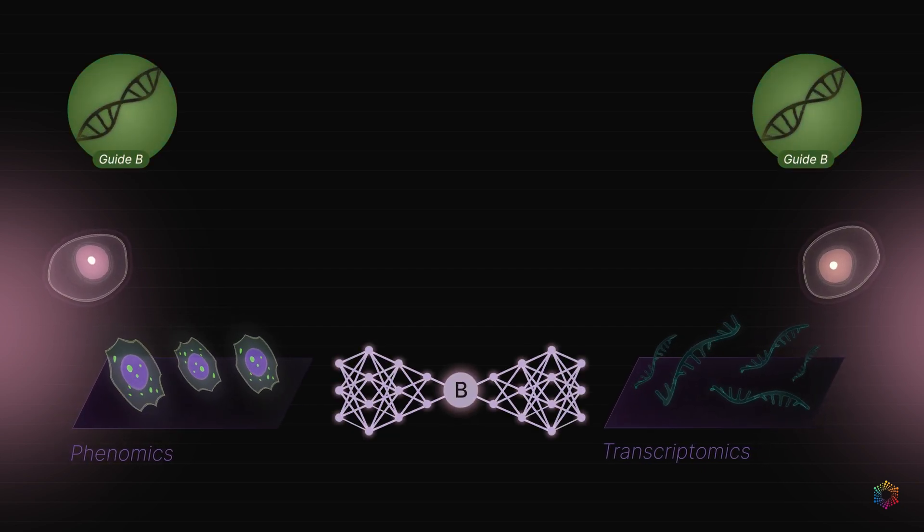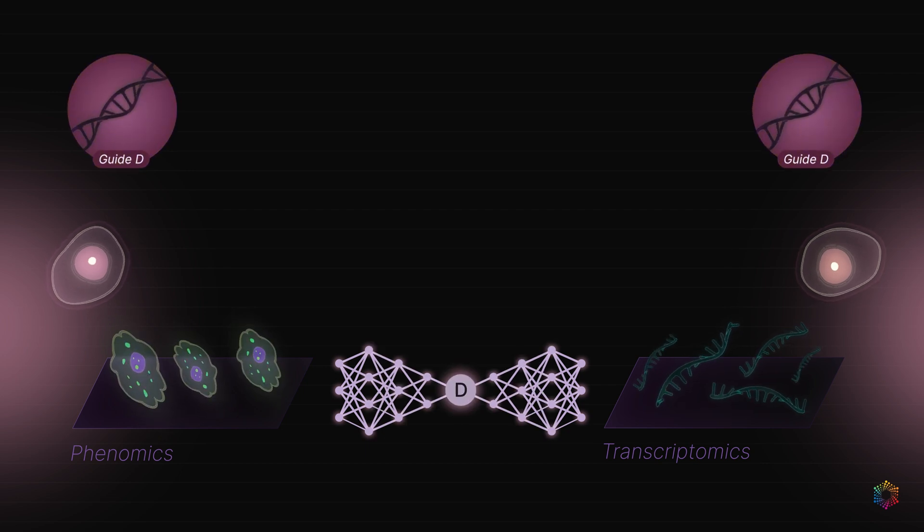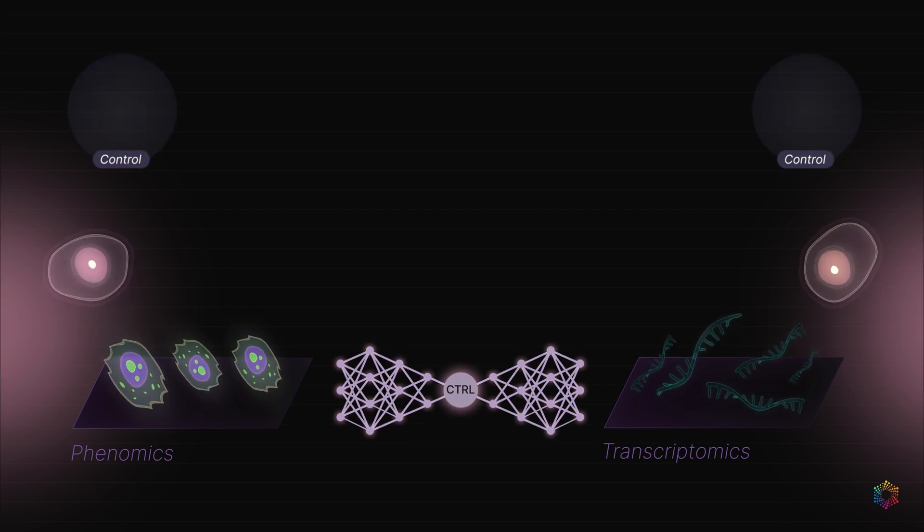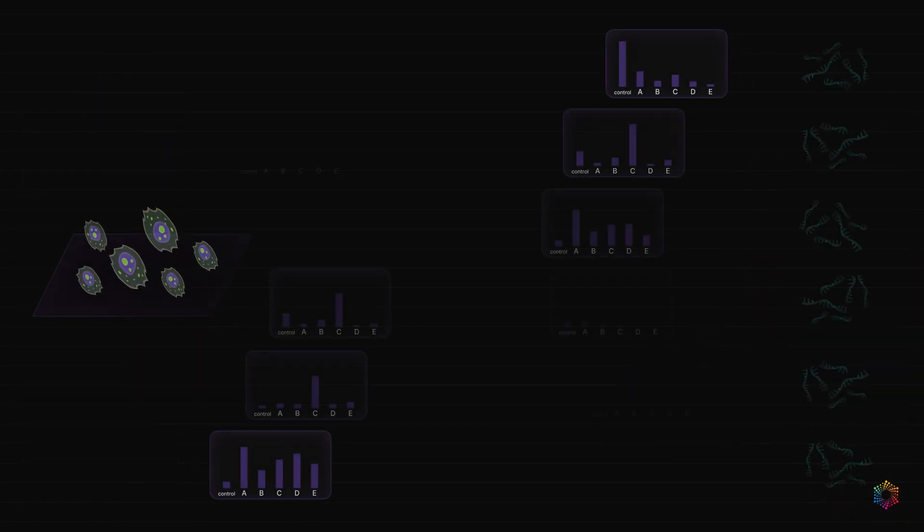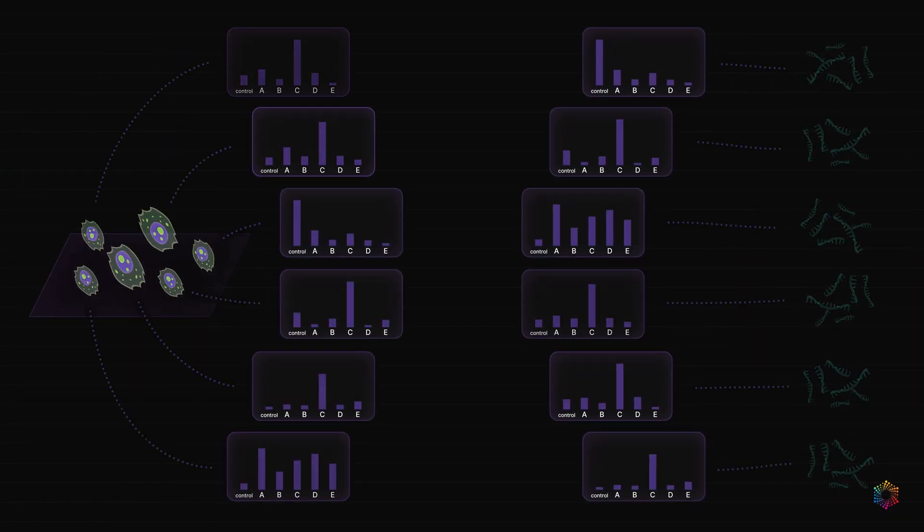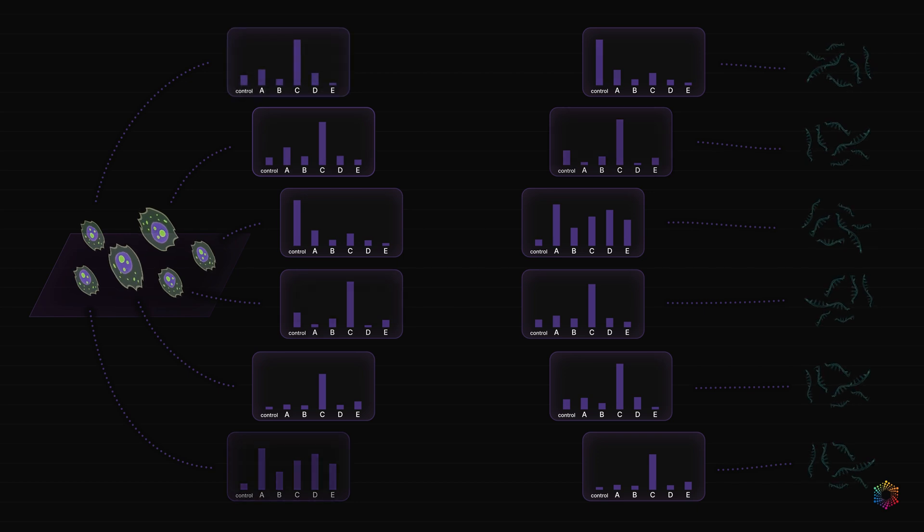We then train two classifiers, one for each modality, to predict which gene was knocked out for each cell. The fitted classifier outputs the conditional probabilities of specific gene knockouts. We can use this classifier to understand the difference between cells within a perturbation group by reading its predicted probabilities.